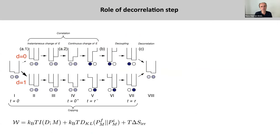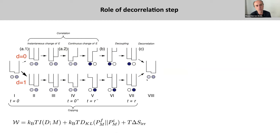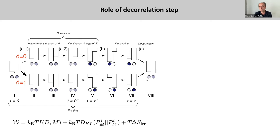What is the role of the decorrelation step? So far we've looked at the work to copy — essentially the work to go from state one to state seven. If you want to use the data bit, you can reverse the protocol and extract work from that — in quasi-equilibrium you would recover all of the work. But that's typically not what you want to do in a measurement. In the cellular system, after the state of the receptor was copied into the chemical modification state of the readout molecule, the readout molecule continues to remember what the state of the receptor was in the past.